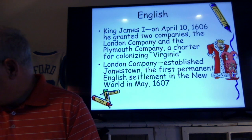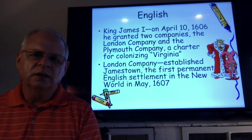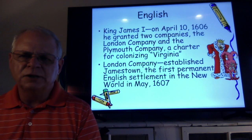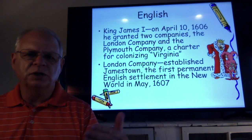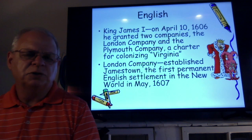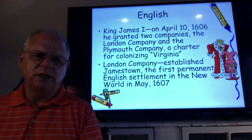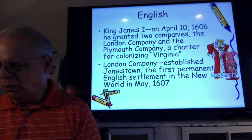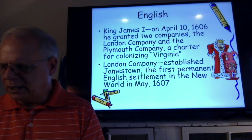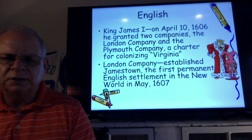On page 21, King James I on April 10th, 1606 granted two companies — the London Company and the Plymouth Company — a charter for colonizing what became known as Virginia, named after the Virgin Queen. The London Company ended up establishing Jamestown, the first permanent English settlement in the New World, in May of 1607. Many of you, because of where we live, have probably had the opportunity to visit Jamestown and see it firsthand as a restored historical site.